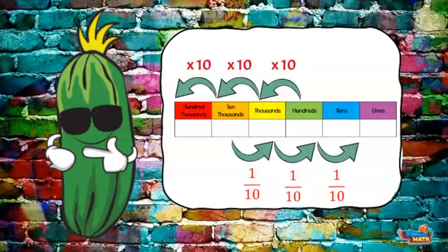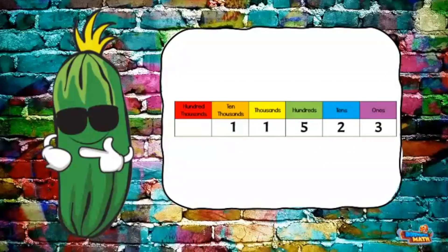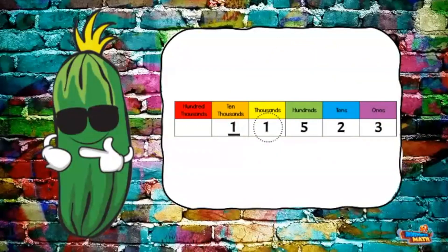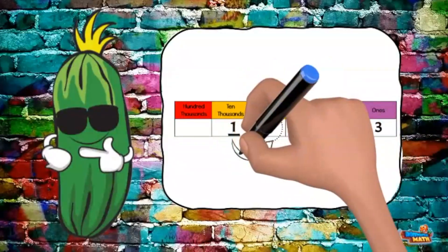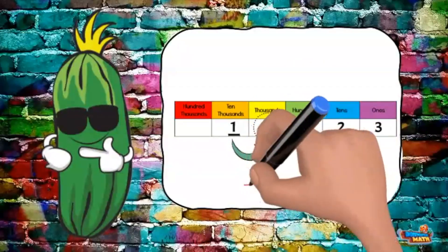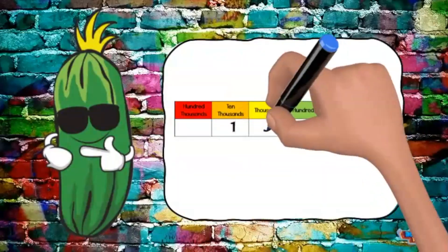The number 11,523 is put in the place value chart like this. The circled number is one-tenth of the underlined number. We can figure this out by starting at the underlined number and moving one place value to the right. The circled number is one-tenth of the value of the underlined number.